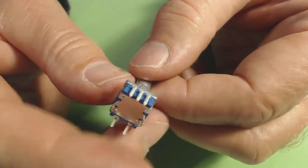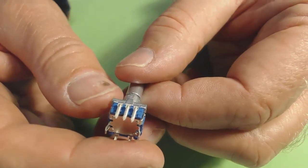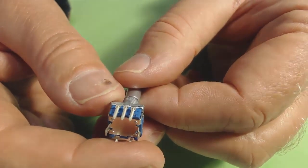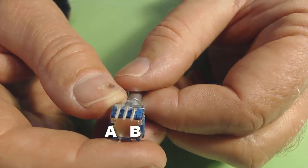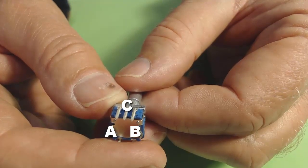On the opposite side, we have three terminals that are part of the encoder. There's the A terminal, the B terminal, and in the center, we have common.